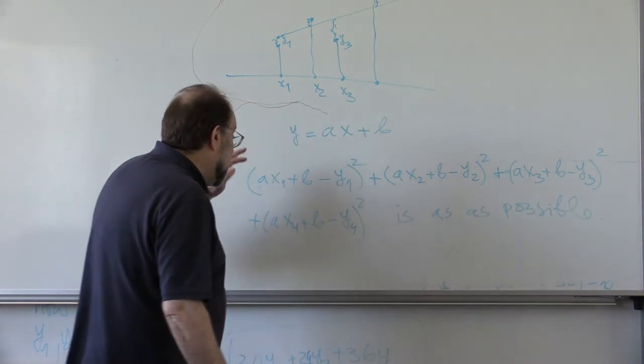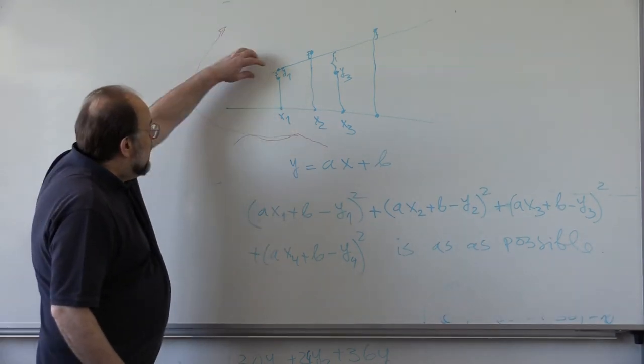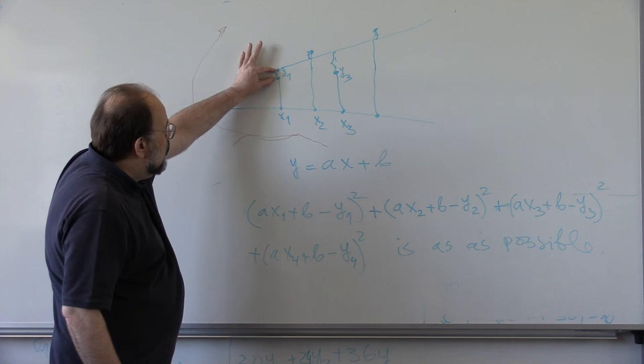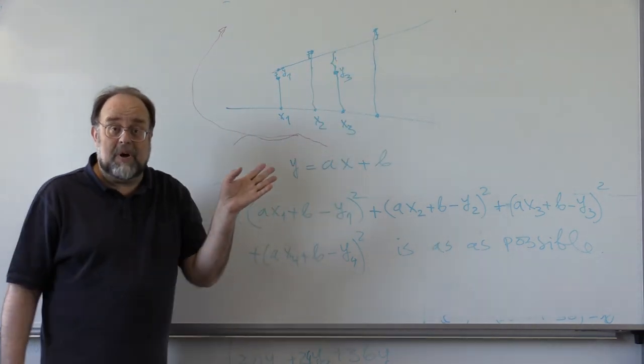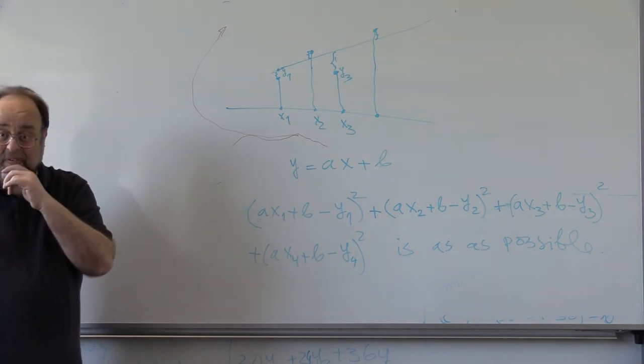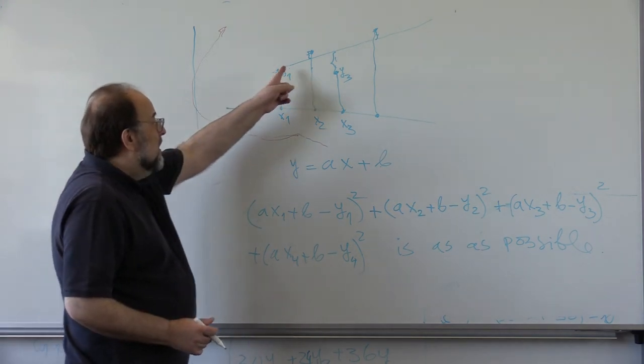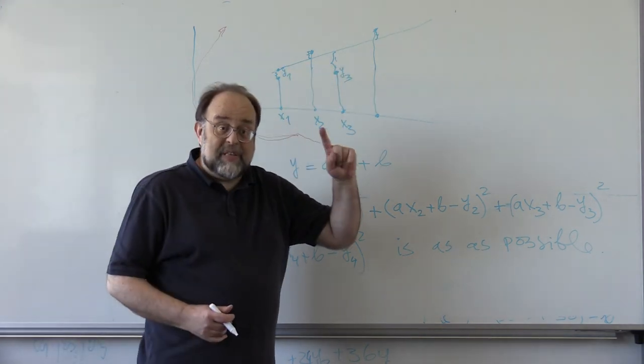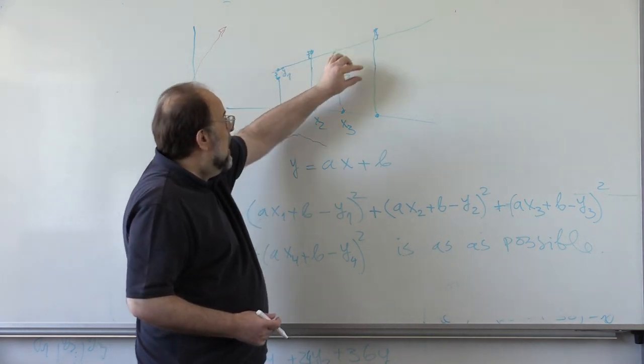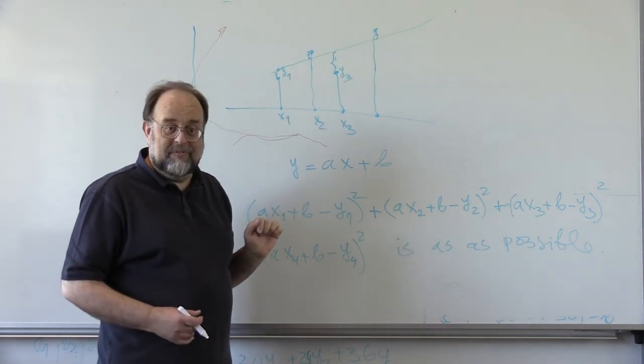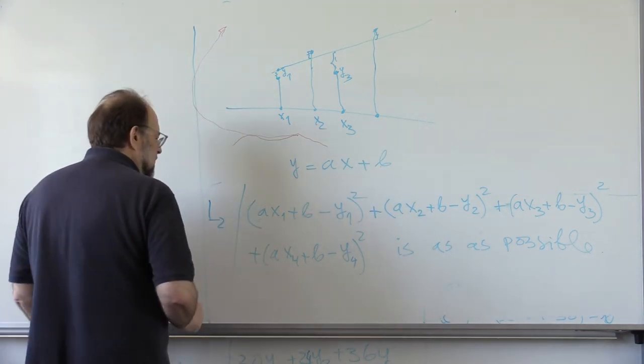is as small as possible. This is typical least squares problem. You want L2 distance between points on the line and given points, sum of the squares to be as small as possible. That's called least squares. But, you can also measure the quality of the fit by what is the largest discrepancy. That would be the uniform norm. This is L2 norm. We will speak about this later.